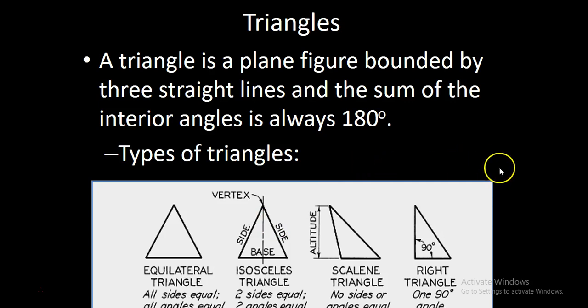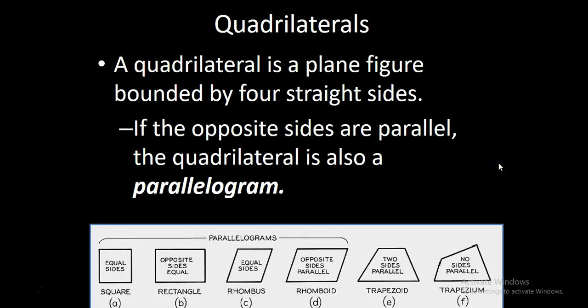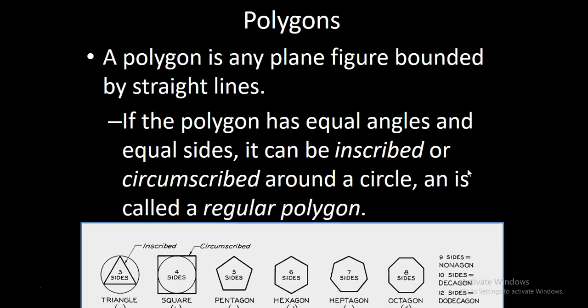Here's a variety of triangles. Here's a number of quadrilaterals where we have four sides, and sometimes those sides are parallel to the opposite side so they're parallelograms. And then a polygon could be any shape, any shape bounded by straight lines. And if the polygon has perfectly matched angles and side length, well then it's a regular polygon.